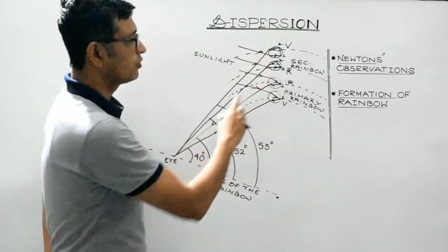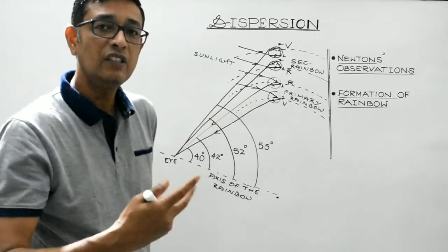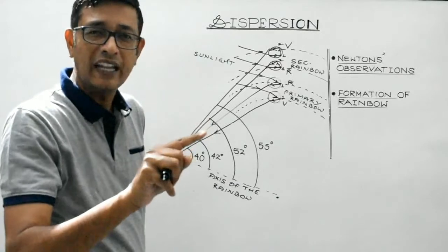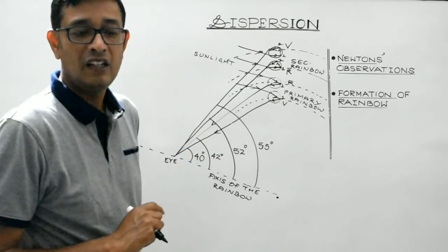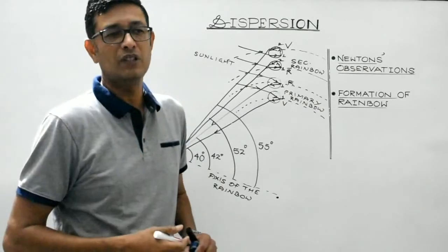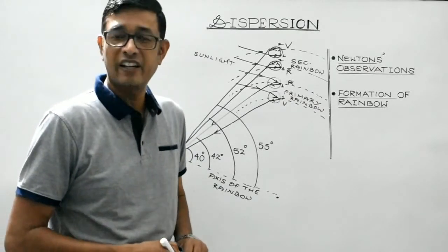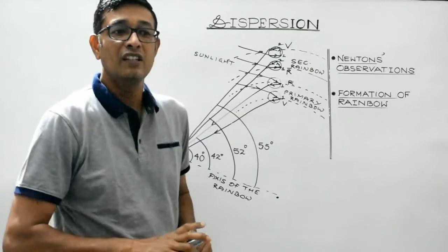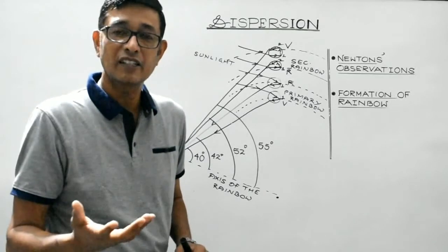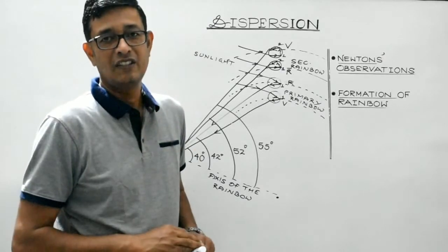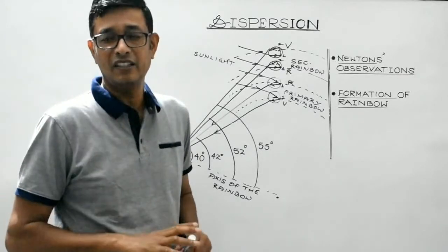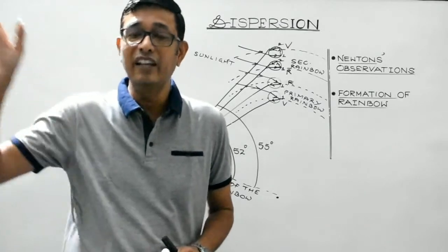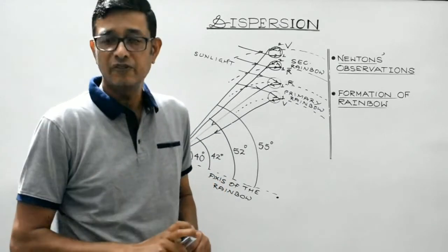These are the two types of rainbows we very often see in the sky when the sun is at the back of the observer during light drizzle or immediately after rain. There are two other rainbows as well — tertiary rainbow, involving three total internal reflections, and quaternary rainbow, involving four internal reflections — but these are very rare to see because they form around the sun, requiring us to look into the glare of the sun.